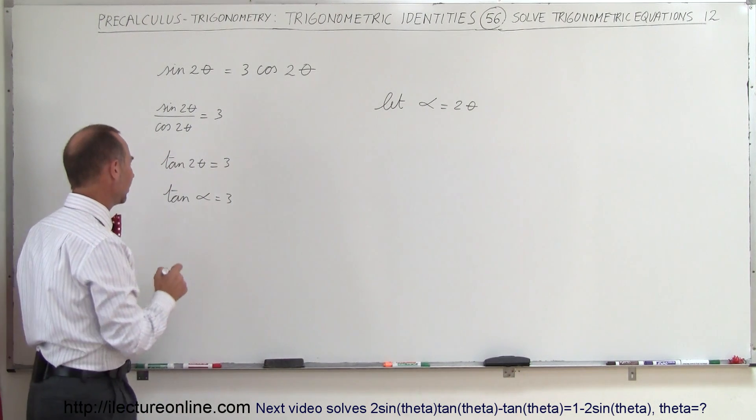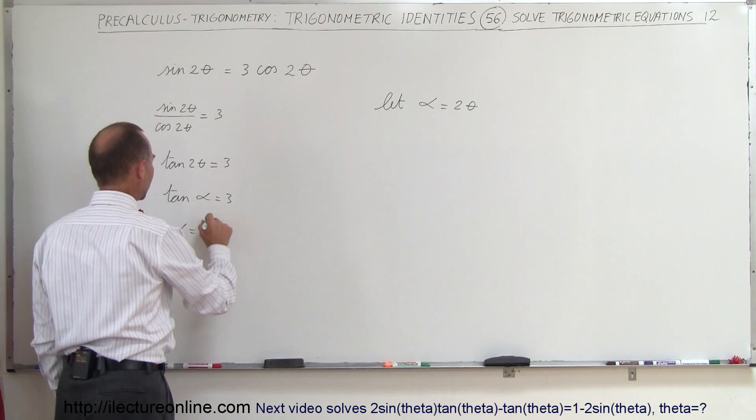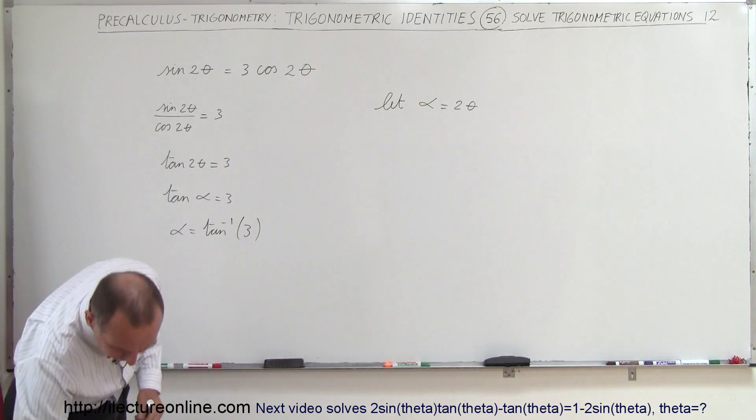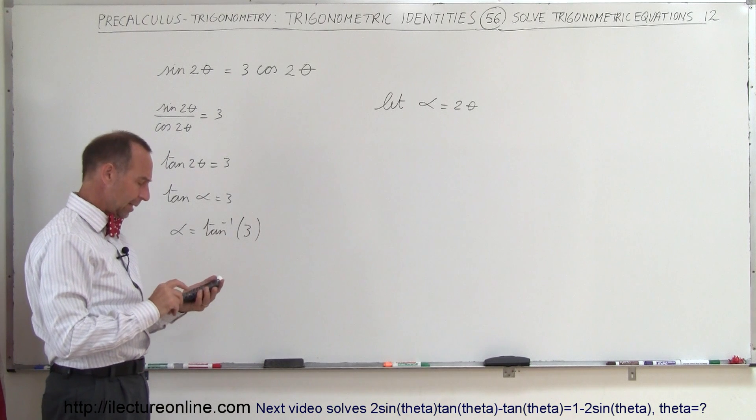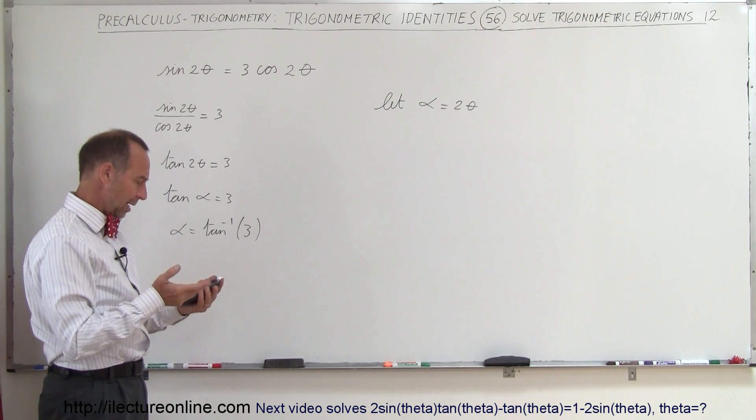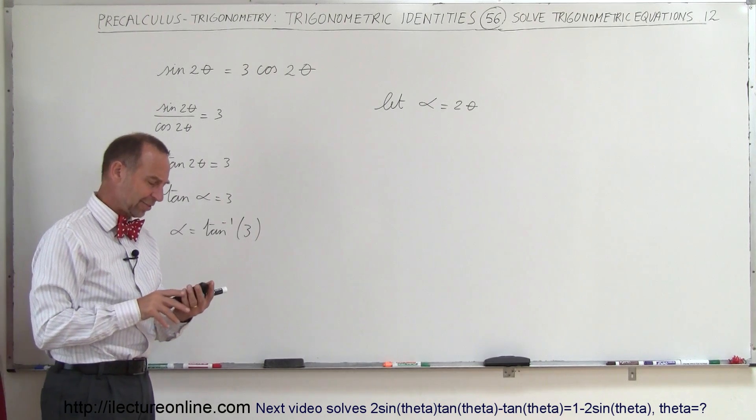So what is the angle α? Well, it's equal to the inverse tangent of 3, and now we grab our calculator. We plug in 3, take the inverse tangent, and we get 71.56 degrees.